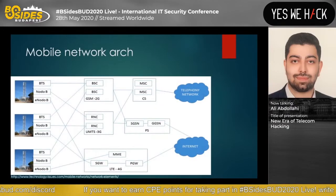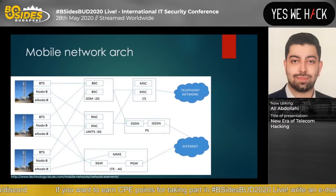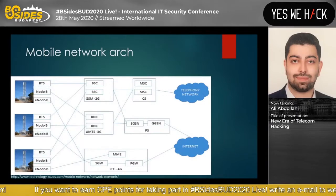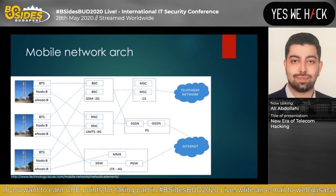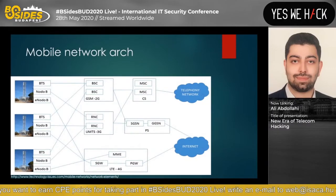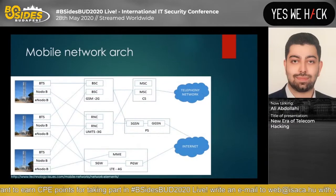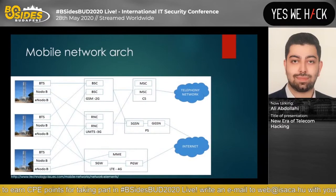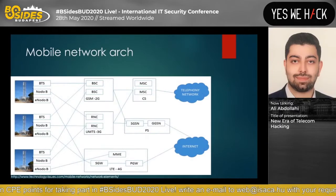For those who have no enough background on mobile networks, here is the architecture of a mobile operator. Each MNO or mobile network operator has three main segments: the Radio Access Network (RAN), which is responsible for all radio and baseband communications from your handset to the tower; the Circuit Switch (CS) network, which handles your voice and SMS; and the Packet network, which is responsible for your internet connection and data.